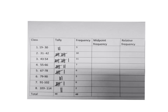To get midpoint frequency, you're going to add your lower limit to your upper limit for each class size, and then divide by the number 2, always the number 2 for midpoint.